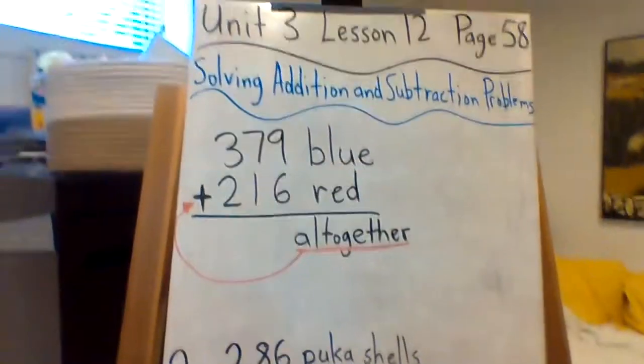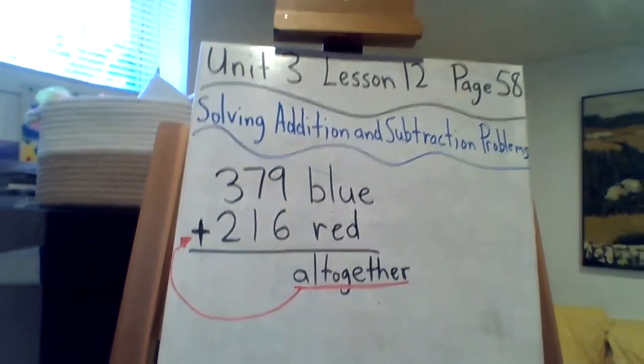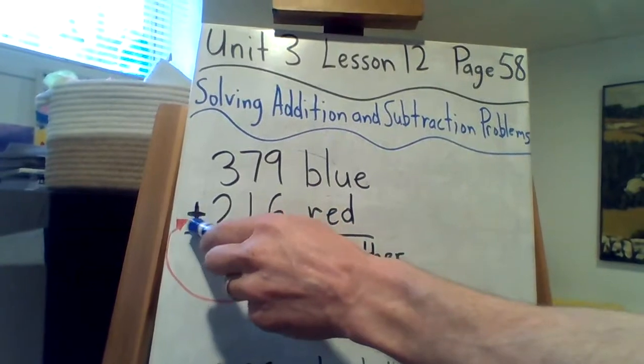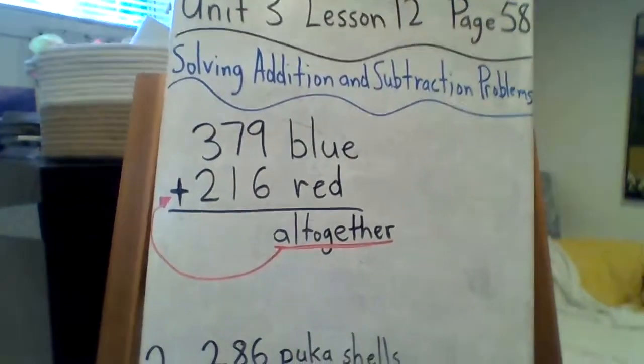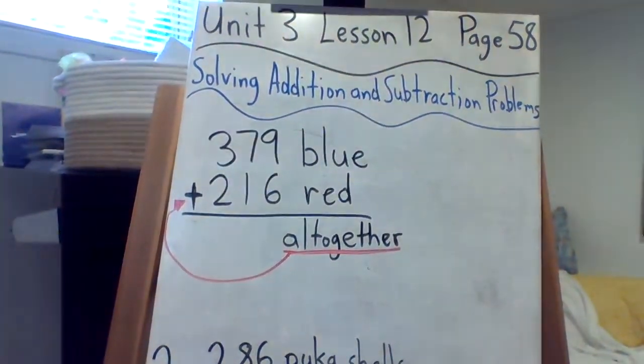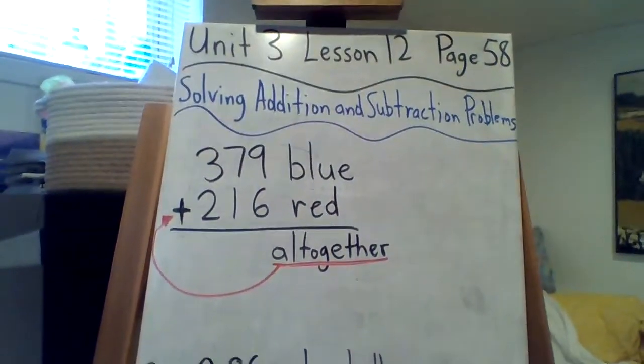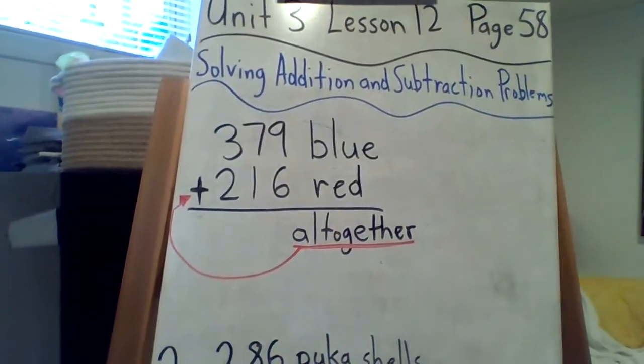Now when you see the word all together, it almost always means addition. So we know we're adding these two numbers together, because they got some red ones, some blue ones, going to add them all up, get a pretty big number.